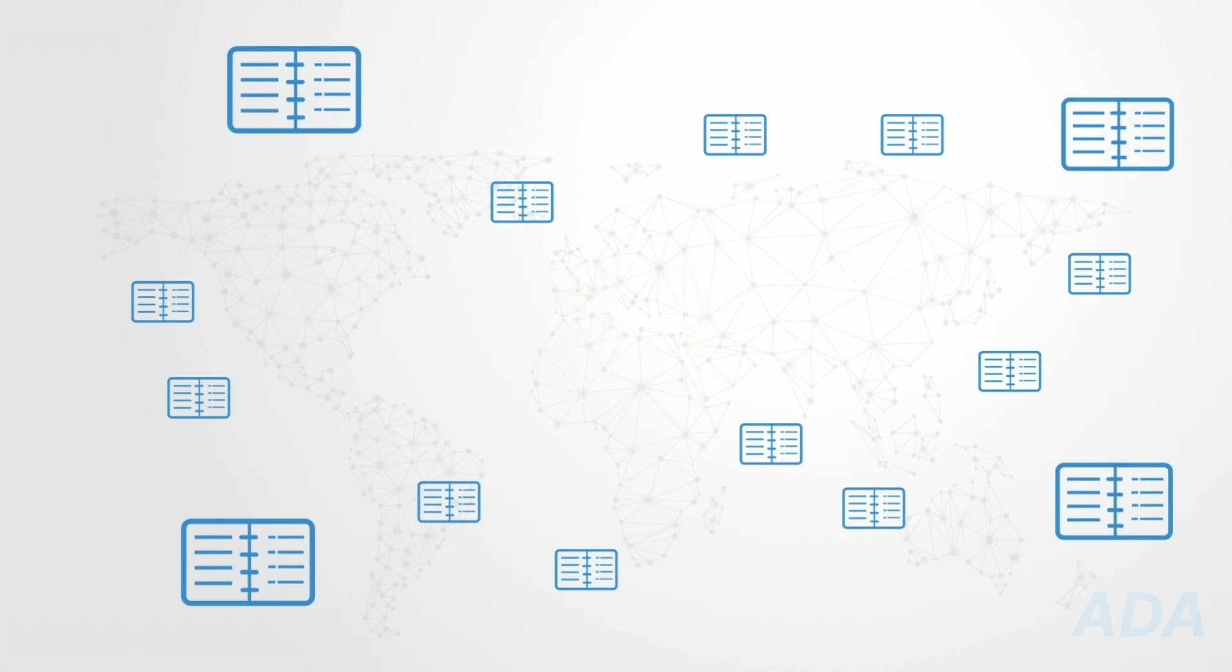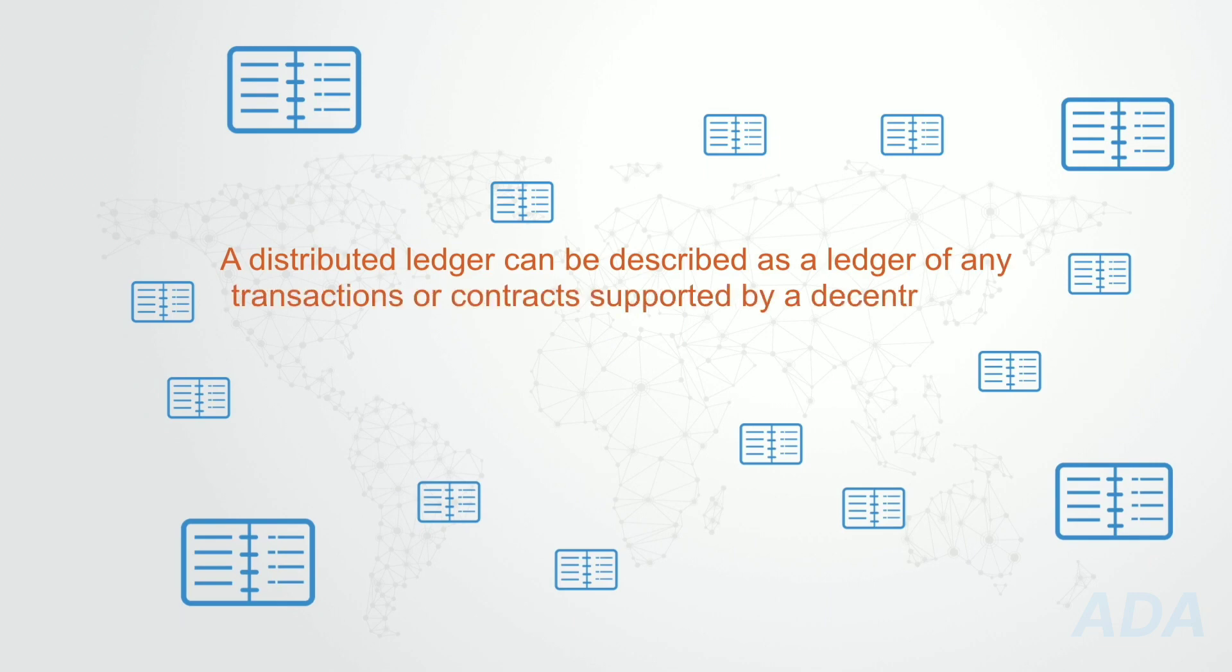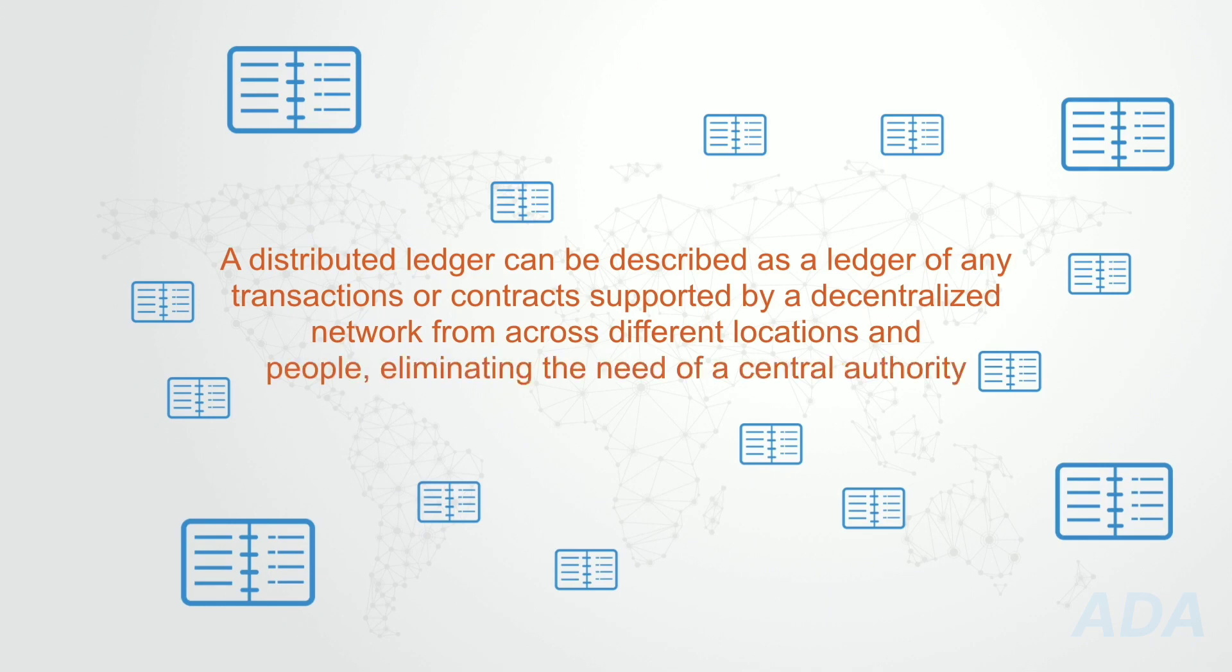A distributed ledger can be described as a ledger of any transactions or records, supported by a decentralized network from across different locations and people, eliminating the need of a centralized authority.